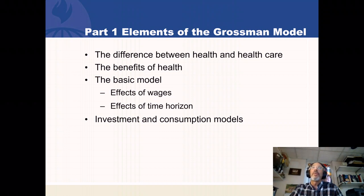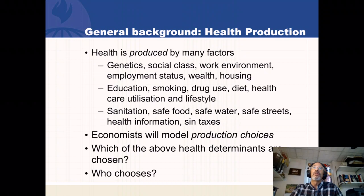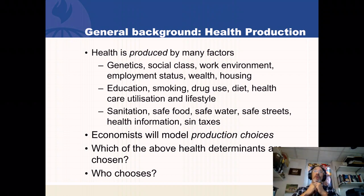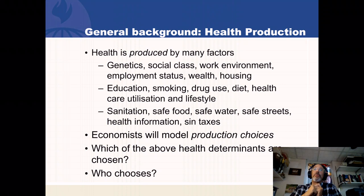Going into the Grossman model, we know that health is produced by many factors: our genetics, our social class, where we work, our employment, wealth, and housing. We know that things that we do — going to school, whether we smoke or use drugs, diet, health care utilization, and lifestyle — are choices that we make and they affect our health too.